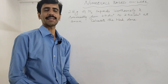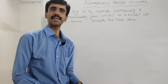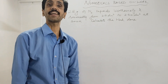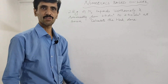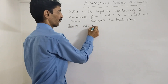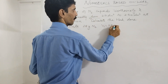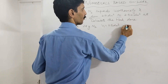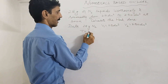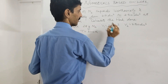Next numerical: 28 grams of nitrogen expands isothermally and reversibly from 25 dm³ to 250 dm³ at 300 Kelvin. Calculate the work done. Data: 28 g nitrogen, v1 = 25 dm³, v2 = 250 dm³, T = 300 K (already in Kelvin, no conversion needed), W = ?